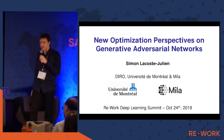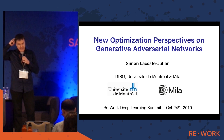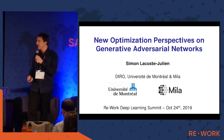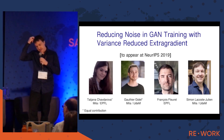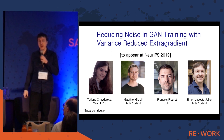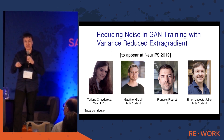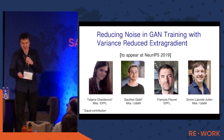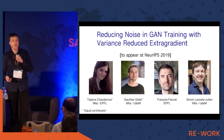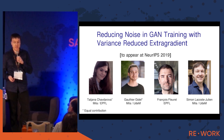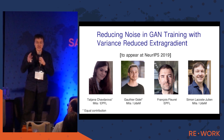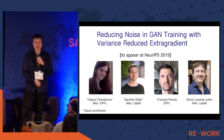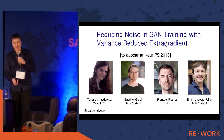This talk is about cutting-edge research from our lab on optimization in generative adversarial networks. There are hundreds of papers on GANs, so it's a very active area of research. This work will appear at NeurIPS in December in Vancouver. The paper is titled 'Reducing Noise in GAN Training with Variance Reduced Extragradient,' and it is mainly work from Tatiana Chavdarova, who was doing an internship at Mila from EPFL, my student Gautier Gidel, and François Fleuret at EPFL.